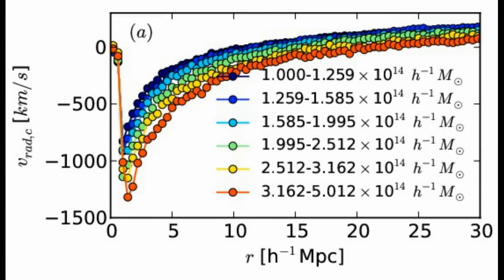The most important parameter of our kinematics model is characteristic infall velocity as a function of radius, as it is directly related to the extended cluster mass profile. This figure shows the infall velocity profiles of simulated clusters with six different masses.